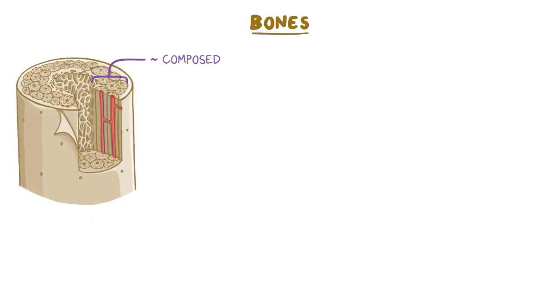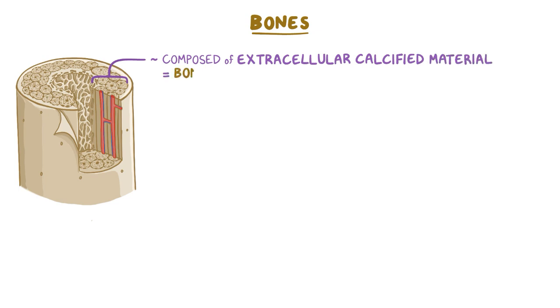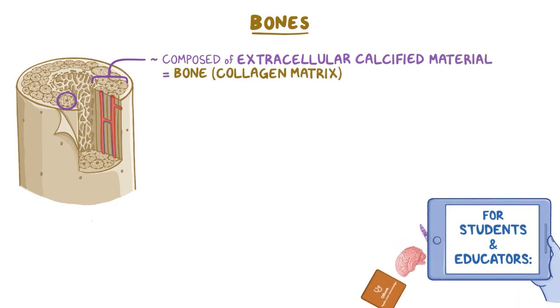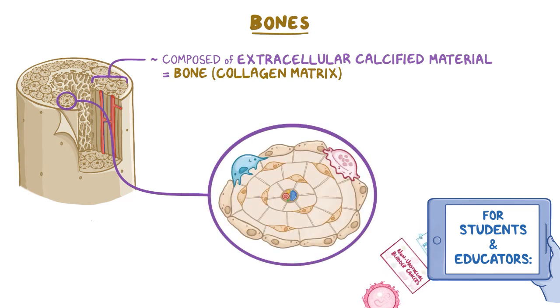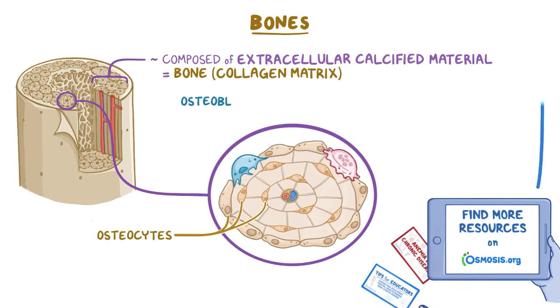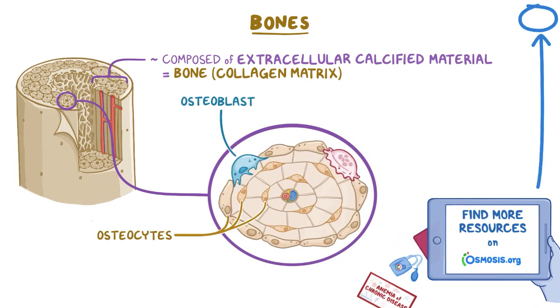Bones are composed primarily of an extracellular, calcified material called the bone matrix, or collagen matrix. It has three main types of cells: osteocytes, osteoblasts, and osteoclasts.